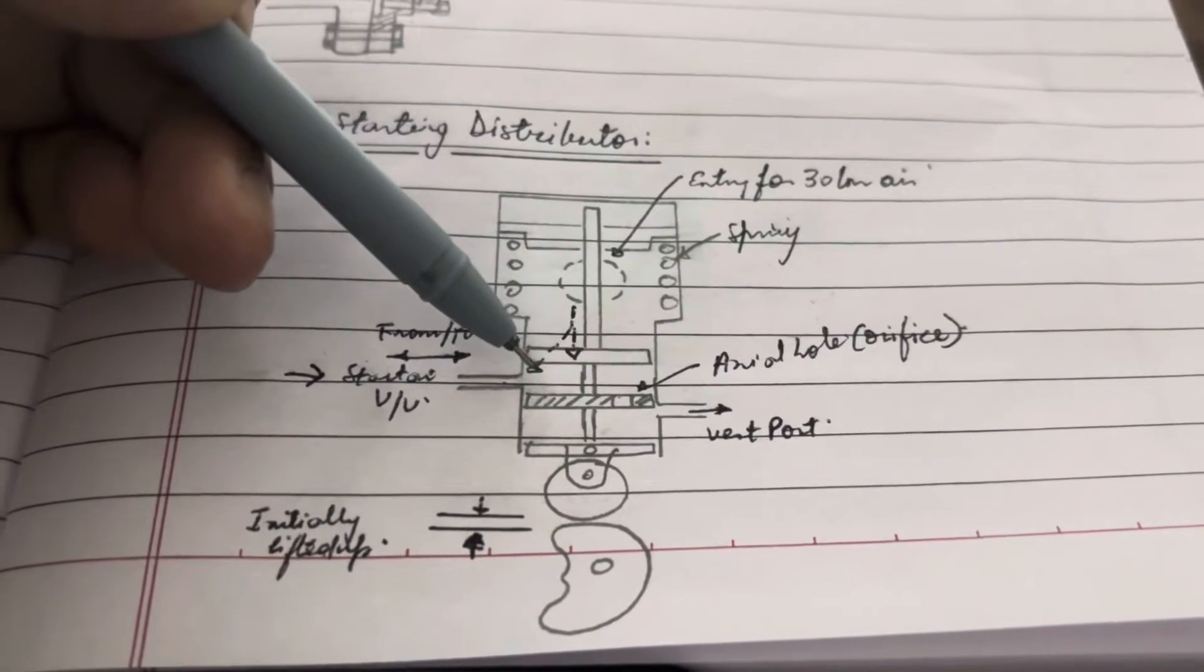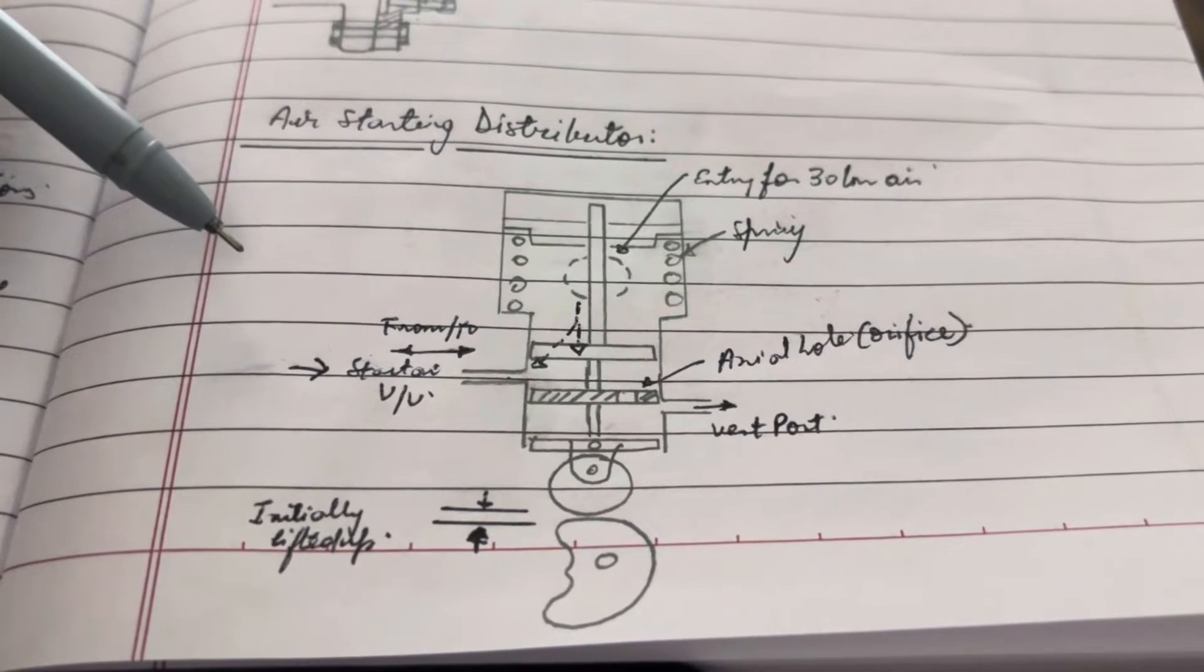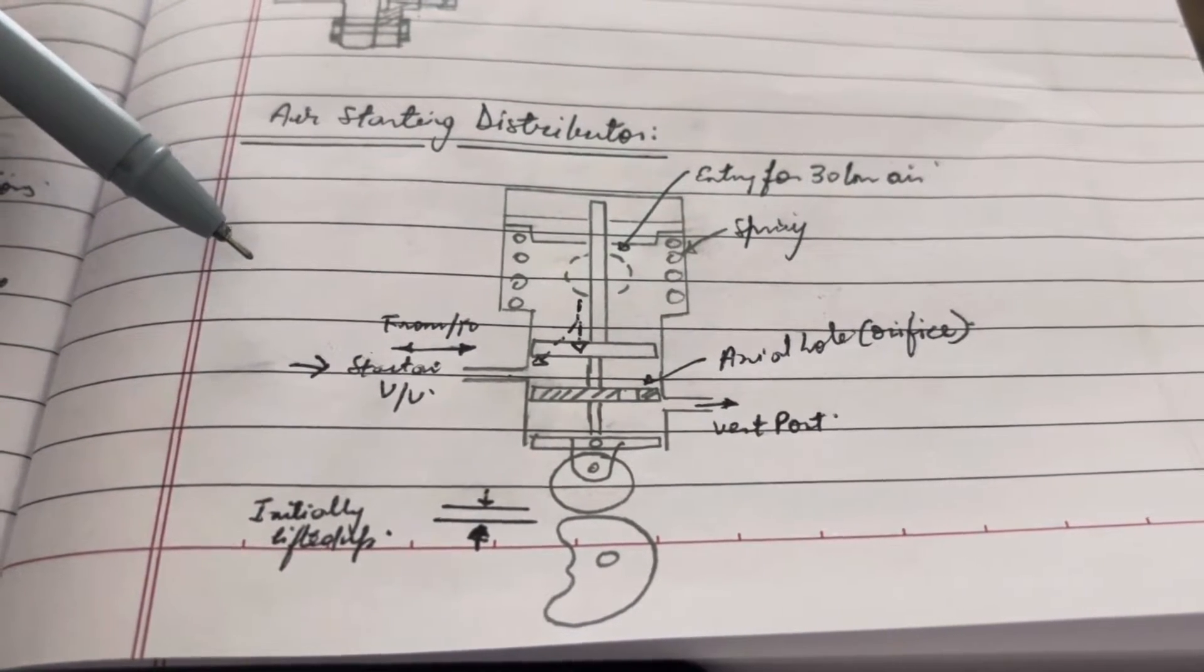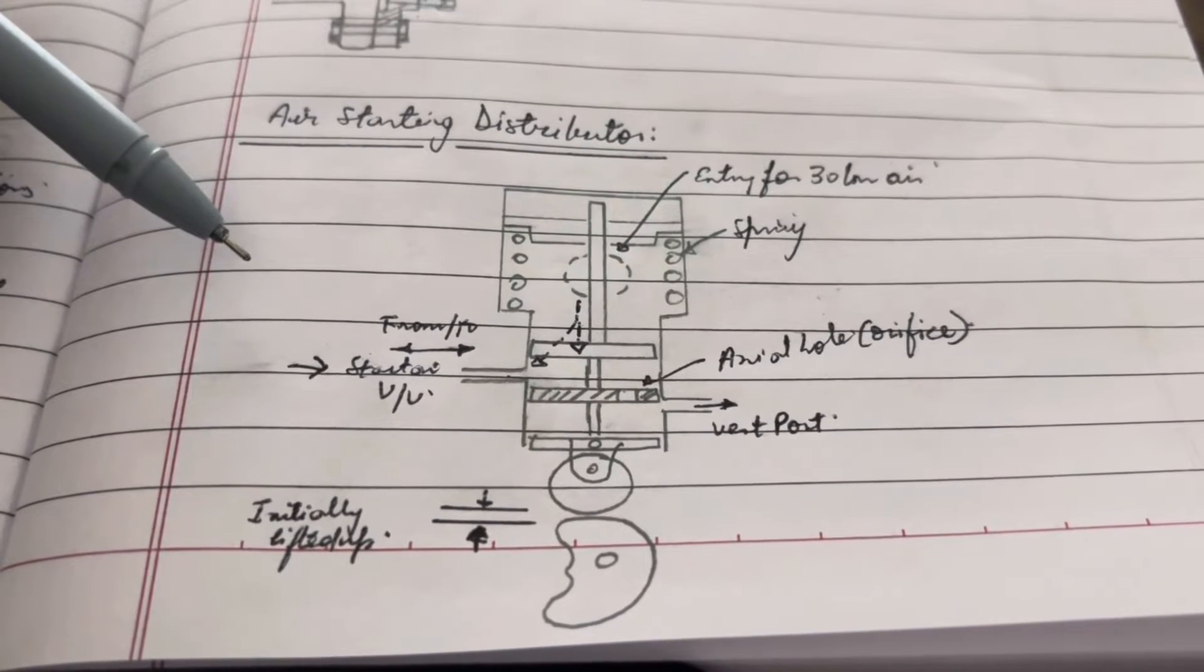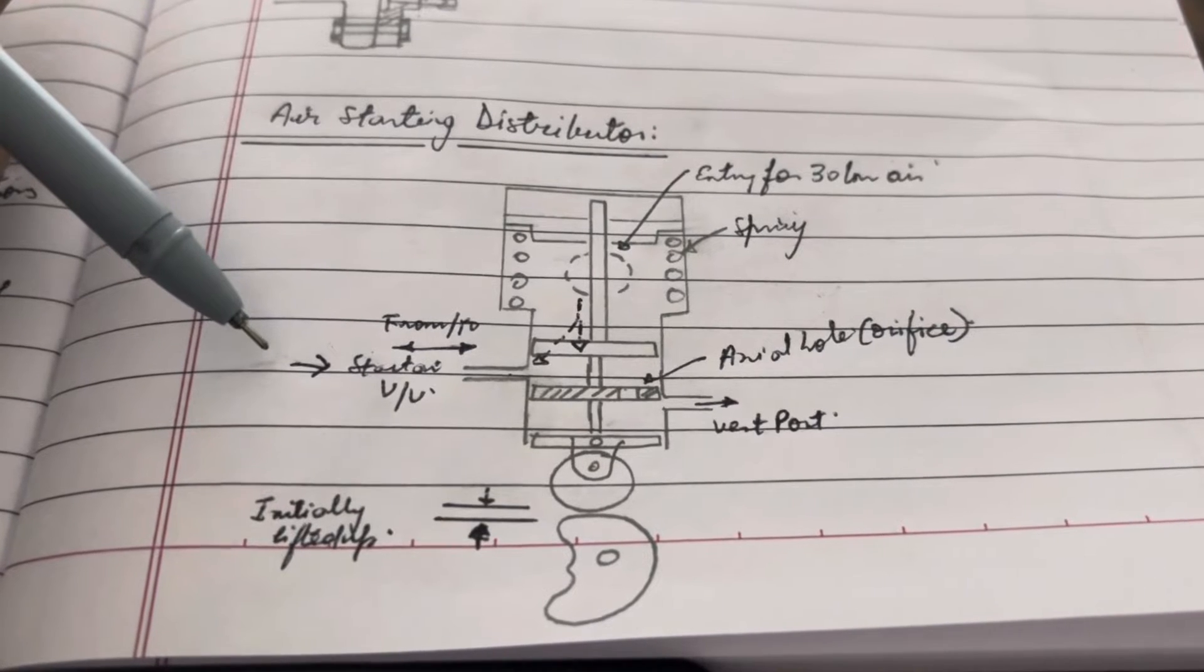It goes towards the unit—that is, the starting air wall. And that is how the starting air wall is actuated when this air that is going out acts on the top of the piston of the starting air wall and pushes it down.